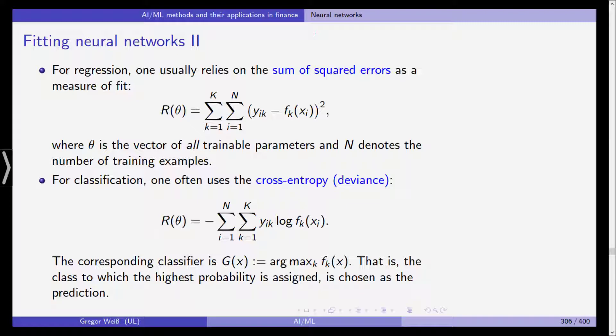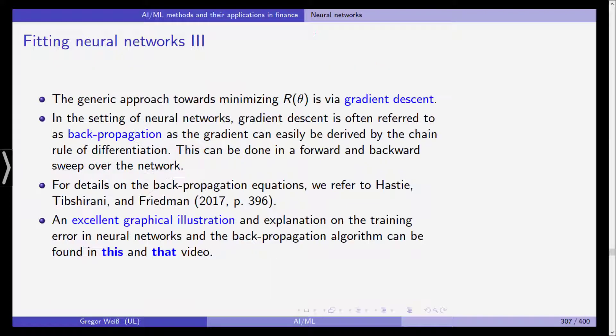Now these are the error functions, the cost functions. We need to minimize these to train our neural network. And the generic approach here is via gradient descent.